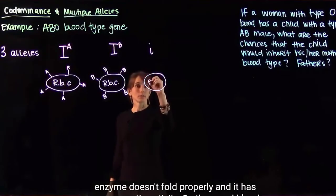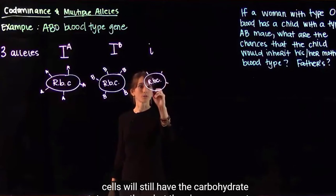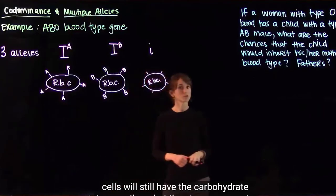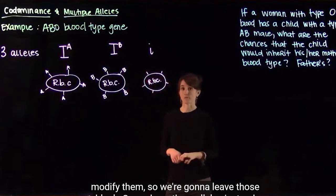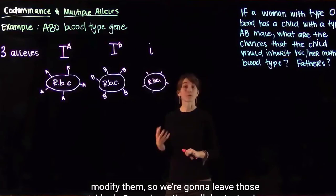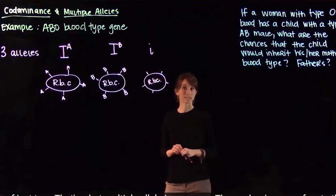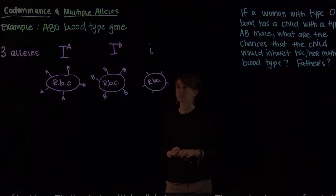So these red blood cells will still have the carbohydrate tags on them, but there's no enzyme to modify them. So we're going to leave those blank. So we have three alleles instead of just two. That's what multiple allelism means.